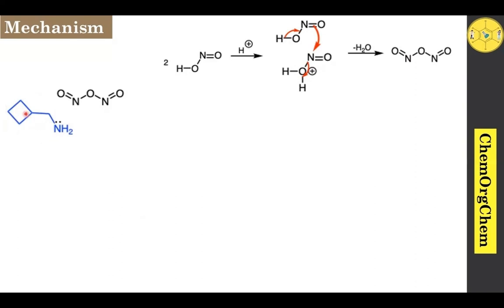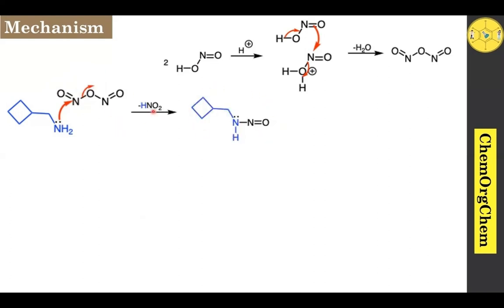Here the aliphatic amine is cyclobutane methanamine. This nitrogen has a lone pair of electrons that will attack the nitrogen center of the reactive intermediate. Since that nitrogen center is attached with two electronegative oxygen atoms, it is slightly electron deficient. Therefore, the nitrogen lone pair of electrons attacks, followed by loss of a portion of the molecule, generating a corresponding intermediate along with one nitrous acid.